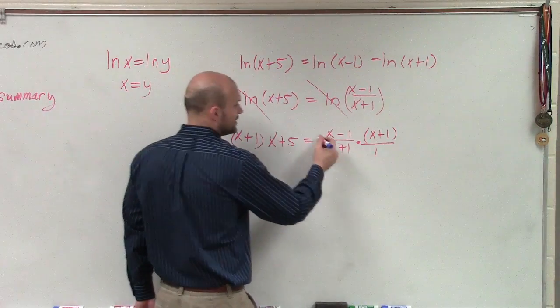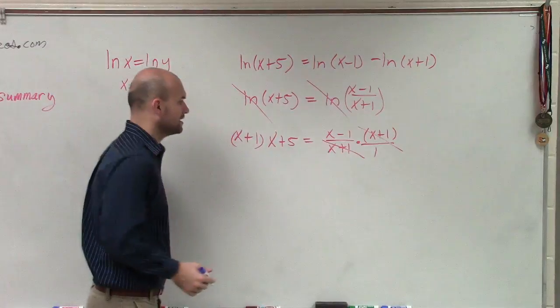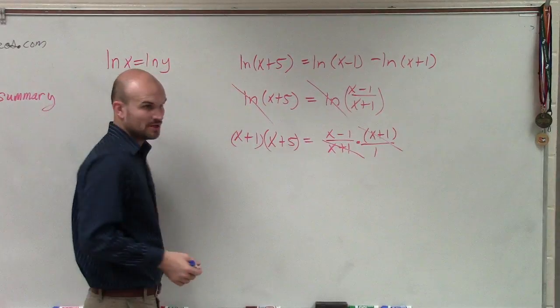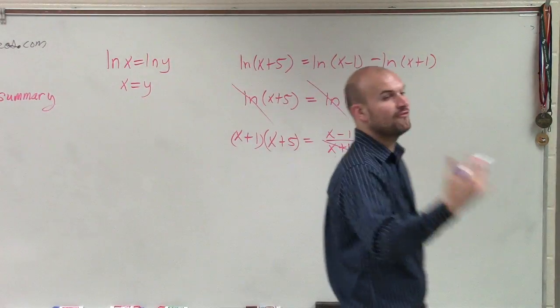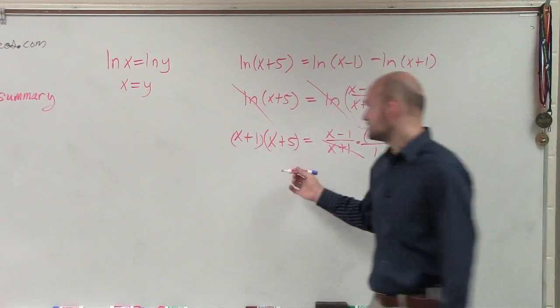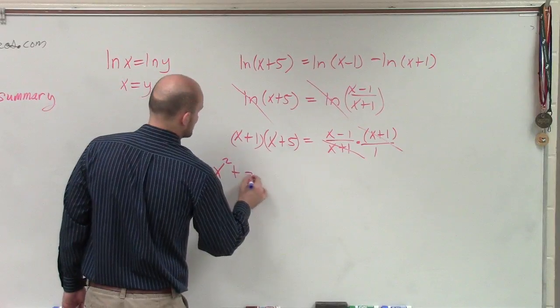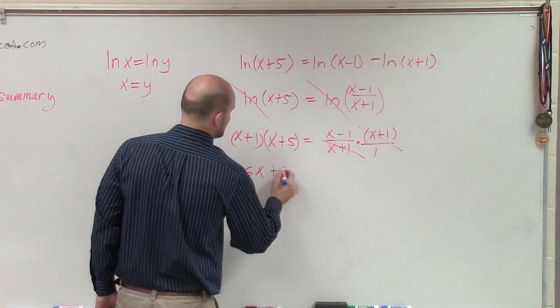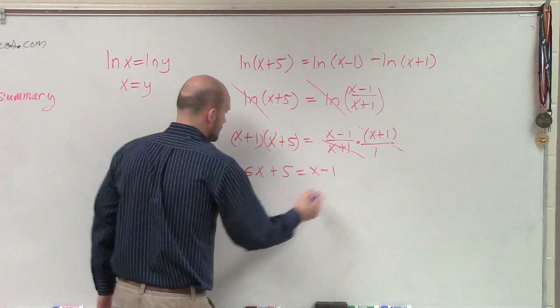Therefore, what's going to happen here is now those are going to divide to 1. And we're left with a trinomial over here. So you can apply FOIL right here on the left side. I'll just do this in my head. So it's going to become x squared plus 6x plus 5 equals x minus 1.